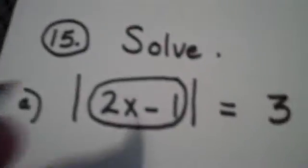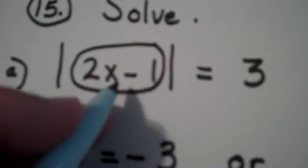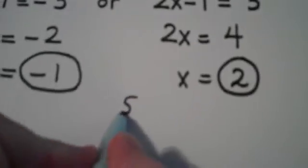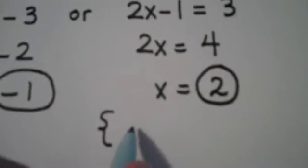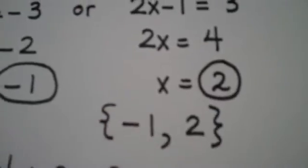If I took the number 2 and went to the original equation, 2 times 2 is 4. 4 minus 1 is 3. Absolute value of 3 is 3. Therefore, they both work. Your solution set here consists of the number negative 1 as well as positive 2.